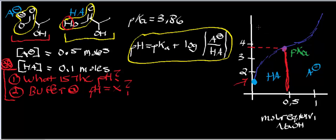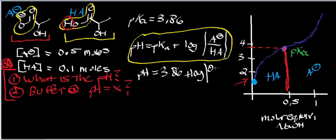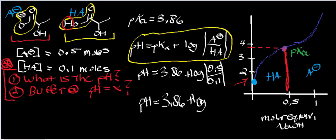In this particular problem, we're given the pKa and the concentrations of each of the individual species in the buffer. Let's start plugging in numbers. We're trying to find the pH when the concentration of the conjugate base, lactate, is 0.5 moles and the concentration of the conjugate acid is 0.1 moles. So the pH equals the pKa, which is 3.86, plus the log base 10 of 0.5 divided by 0.1. The moles cancel out, and 0.5 divided by 0.1 is 5, so we have log base 10 of 5.